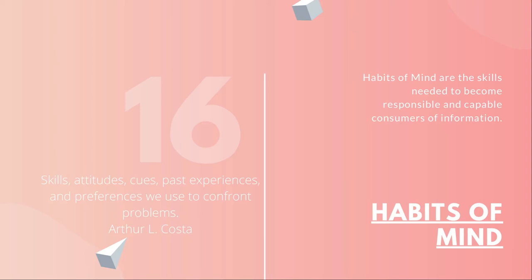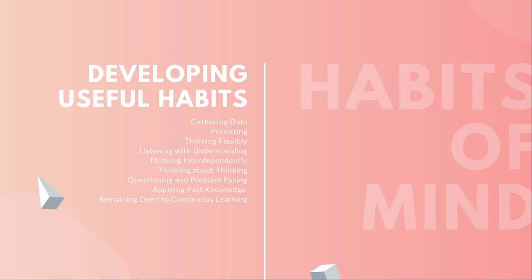The good news is that these 16 skills are probably things we already do — technical skills, attitudes, cues, past experiences, and preferences that we use to solve problems in other areas of our lives. I'm not going to talk about all 16 today, but I'll cover about half of them. These habits are all interconnected, so if gathering data sounds like applying past knowledge, or remaining open to continuous learning sounds like thinking flexibly, that's okay — they depend on one another.